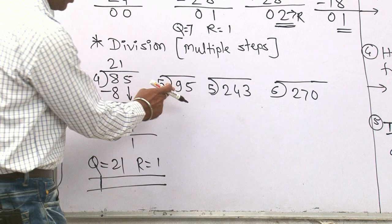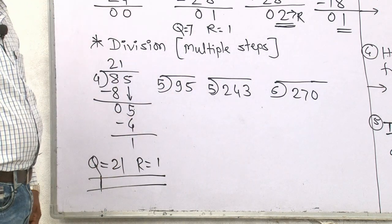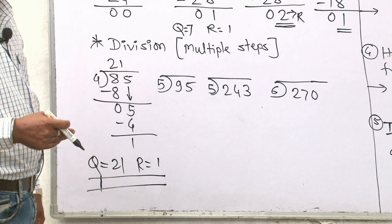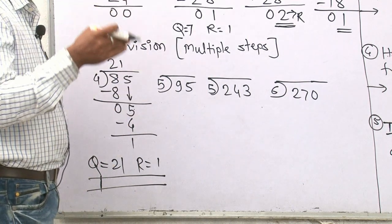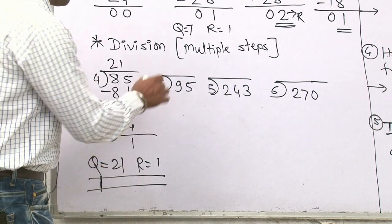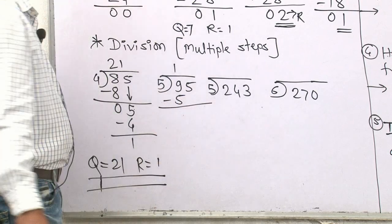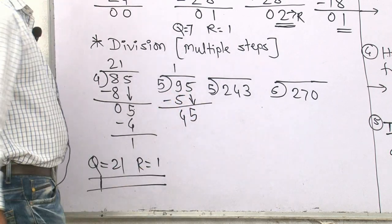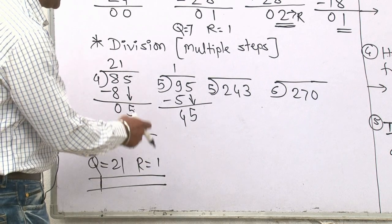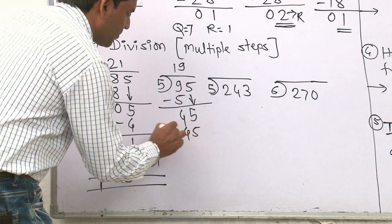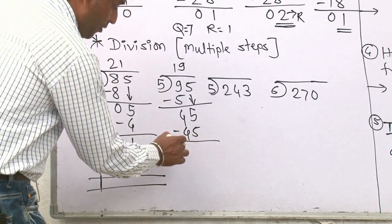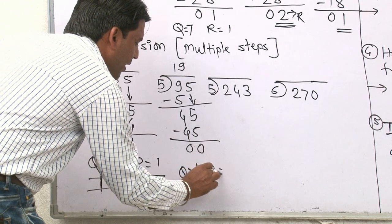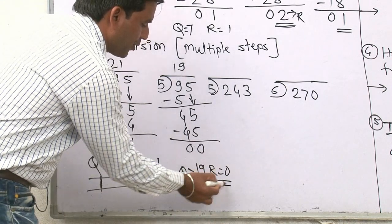Next one: 95 divided by 5. We check if 9 appears in the 5 table. It does not, so we find the nearest smaller number. 5 ones are 5. 9 minus 5 is 4. Now we bring down 5, making it 45. After that, 5 nines are 45. 45 minus 45 is 0. So your quotient is 19 and remainder is 0.